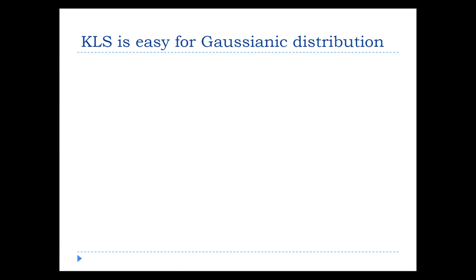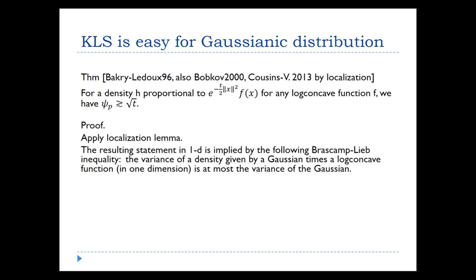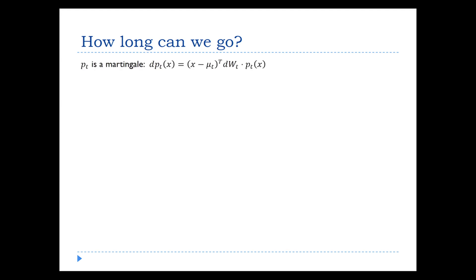For such distributions — we already saw from the first lecture, and we can prove this by standard localization — the Cheeger constant is square root t. So if you're able to go for a constant time, you get the Cheeger constant as a constant. The proof of this is just applying the standard localization lemma. Your one-dimensional needles will still carry the Gaussian with them, and then you have a one-dimensional inequality which says that the variance of a Gaussian restricted to a convex body can only be smaller — that's the Brascamp-Lieb inequality. So the destination is good, the target is good, but we have to worry about how long we can go. We still need to infer that the original distribution has good Cheeger constant, not the target.